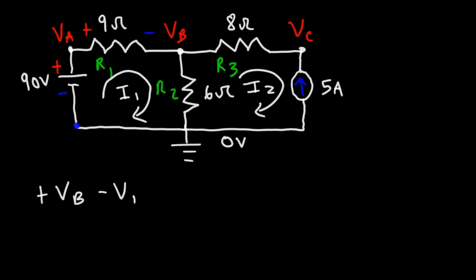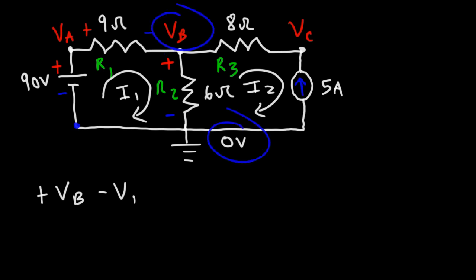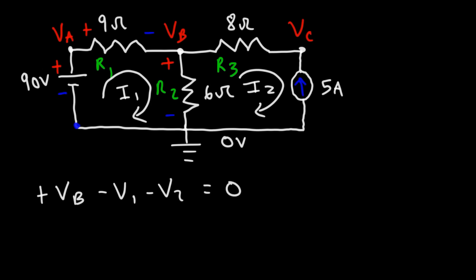This is going to be V1, the voltage across R1, and then as we travel through R2 that's another voltage drop. Current flows from VB from a high potential to a low potential. Since VB is higher than zero volts, this side should be positive. So we're going to use minus V2 for R2 — another voltage drop. This is the equation we have using Kirchhoff's voltage law.